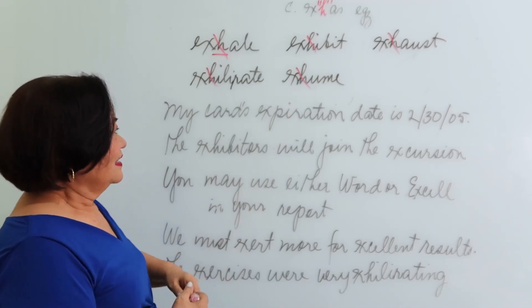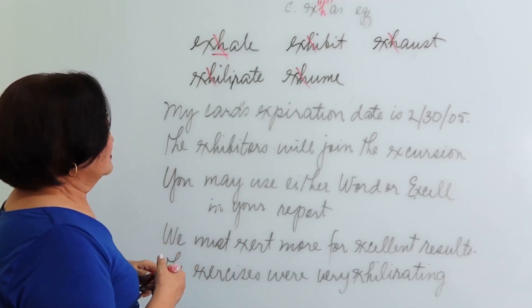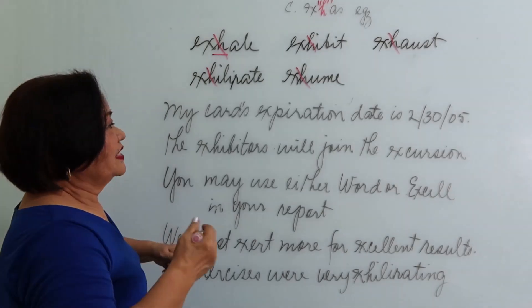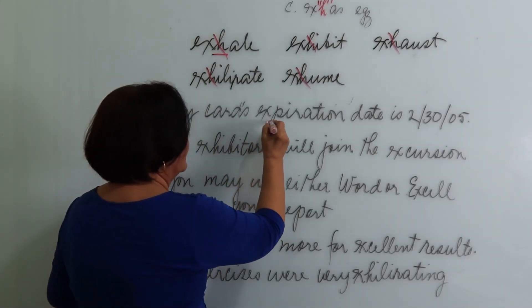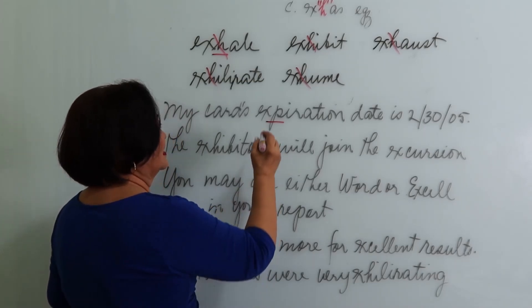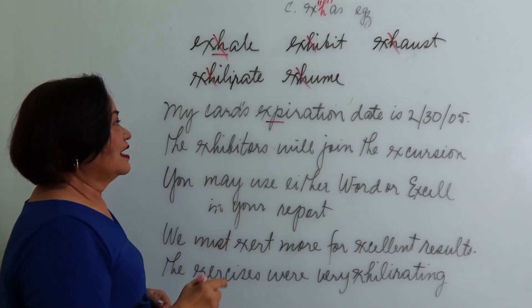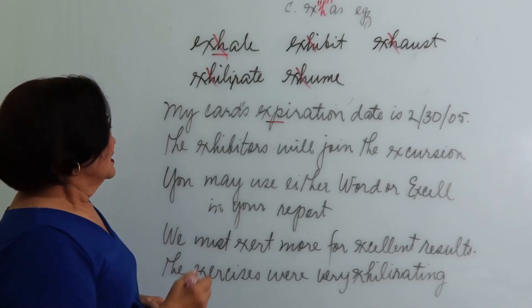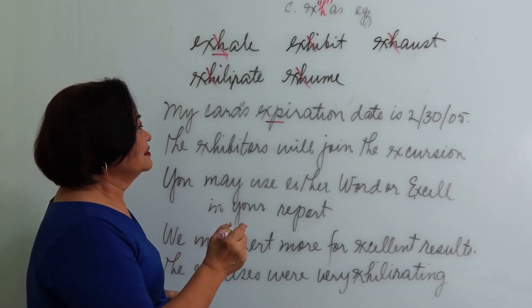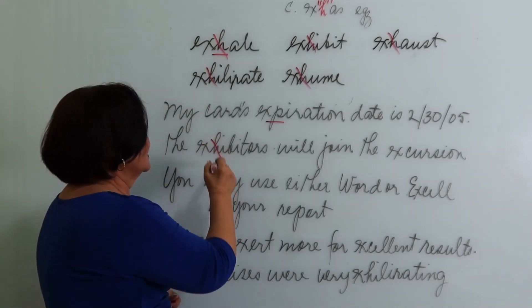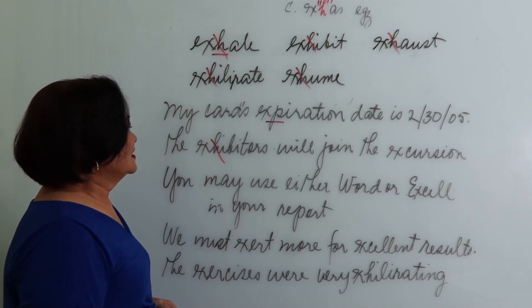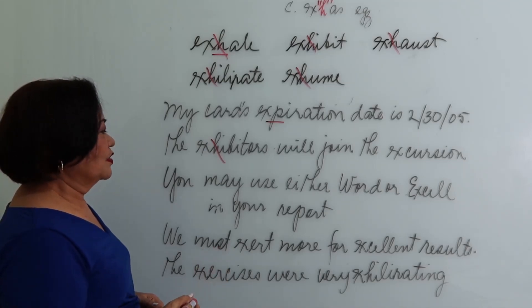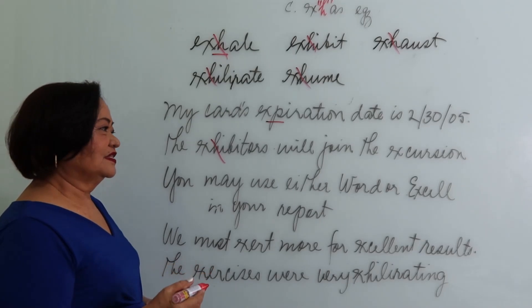Let's practice it on these sentences. My card's expiration date is 2-30-05. Now this one has the sound of X because X is followed by a consonant. My card's expiration date is 2-30-05. The exhibitors will join the excursion. The exhibitors, so it is an egg. The exhibitors will join the excursion. You may use either Word or Excel in your report. You may use either Word or Excel.